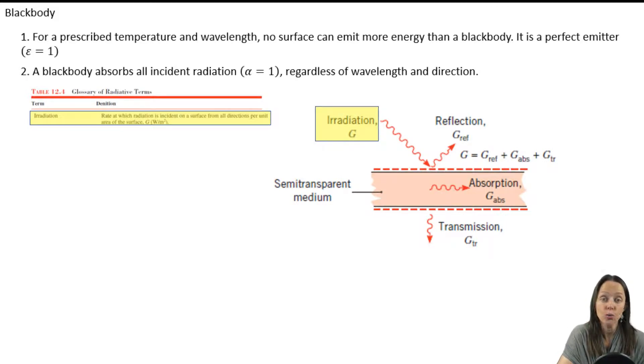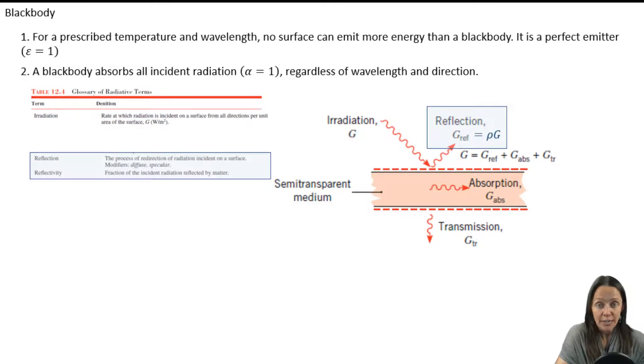Any incoming radiation that hits or is incident on the surface is called irradiation. And once that radiation hits the surface, it could do several things. Actually, three things. It could be reflected. The fraction of irradiation that is reflected is called the reflectivity.